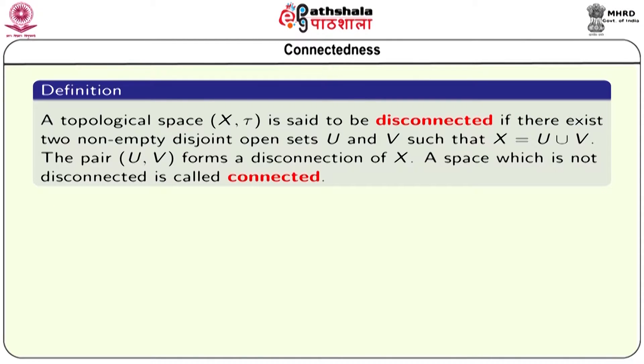Our intuition suggests that a topological space is connected if it consists of a single piece. We mathematically formulate this intuitive understanding: a topological space X tau is said to be disconnected if there exist two non-empty disjoint open sets U and V such that X equals U union V. The pair U, V forms a disconnection of X. A space which is not disconnected is called connected.